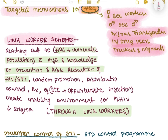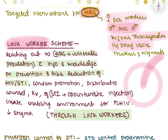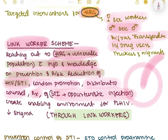One key intervention is the link worker scheme. A person from the community learns about AIDS and HIV and returns to educate the community. The link worker reaches high-risk and vulnerable populations with information on prevention and risk reduction, helps with condom promotion, distribution, counselling, and treatment of STIs and opportunistic infections, creating an enabling environment that reduces stigma.